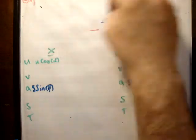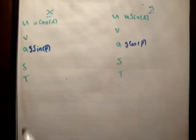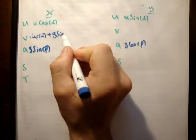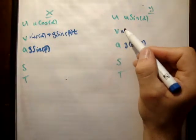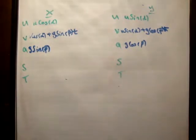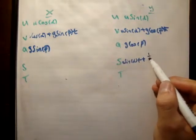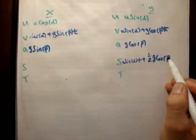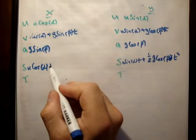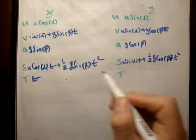We don't need the sketch anymore, so we start analyzing properly. Using v = u + at: in the x prime direction, v_x = u cosine alpha + g sine beta × t; in the y prime direction, v_y = u sine alpha + g cosine beta × t. Using s = ut + ½at²: s_y = u sine alpha × t + ½ g cosine beta × t²; s_x = u cosine alpha × t + ½ g sine beta × t².